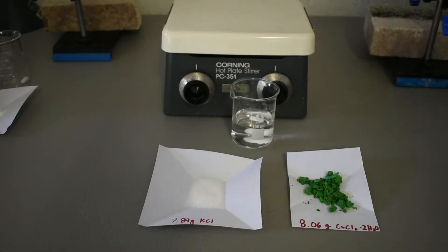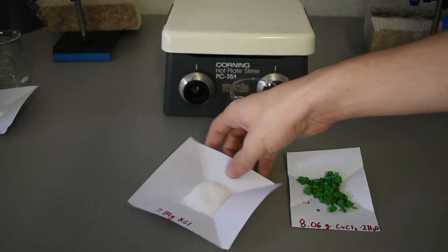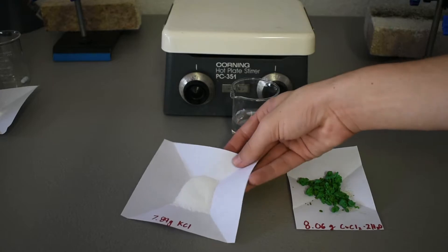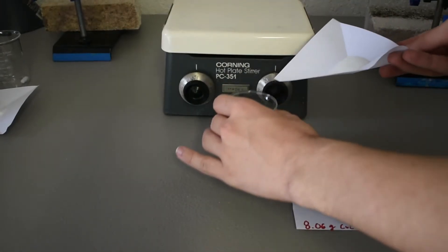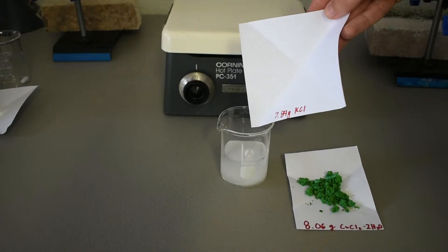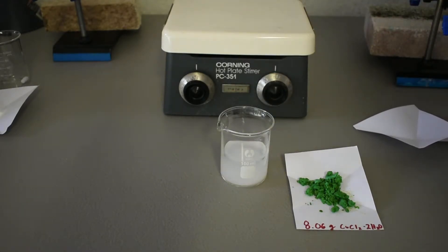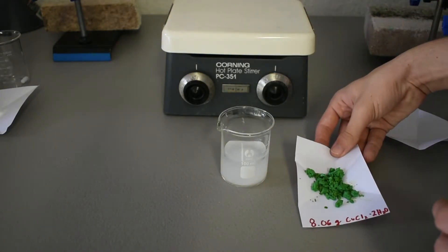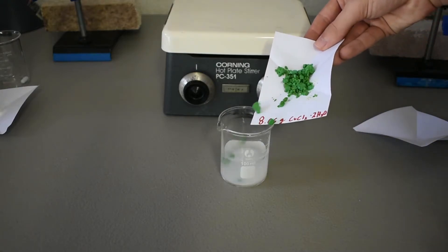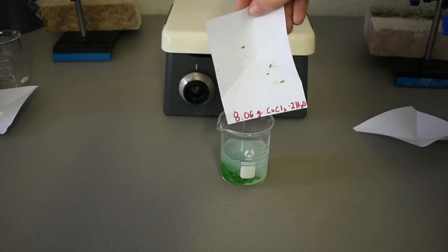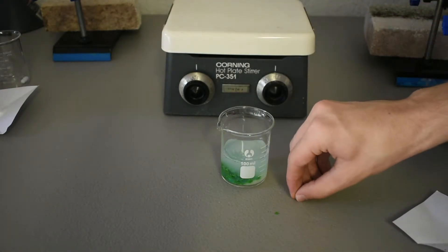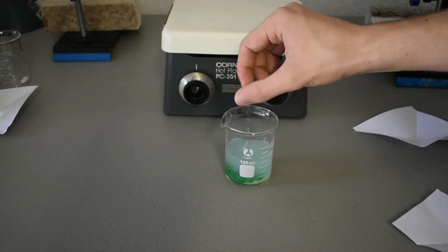So I'm going to get some water. Add about 50 milliliters, and then I'm going to add our salts. So in goes the potassium chloride. There we go. And then our copper chloride. And then I'll get this stirring.